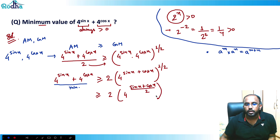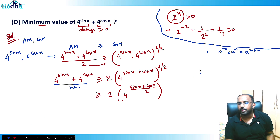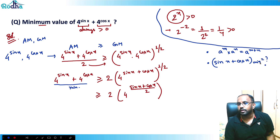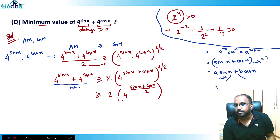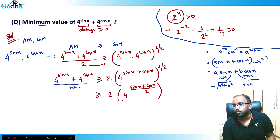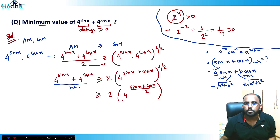The unknown quantities are sin x and cos x. We should know that for a·sin x + b·cos x, its minimum value is −√(a² + b²) and its maximum value is +√(a² + b²).